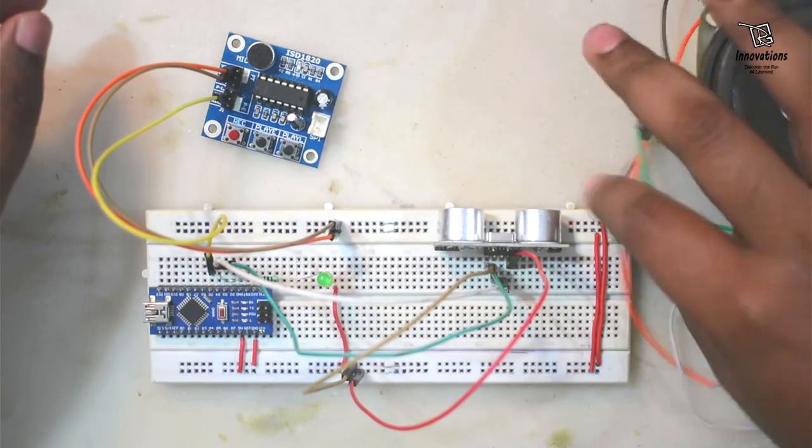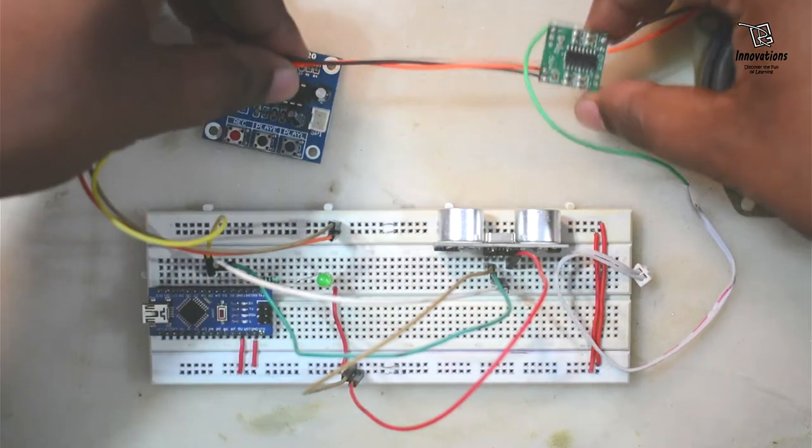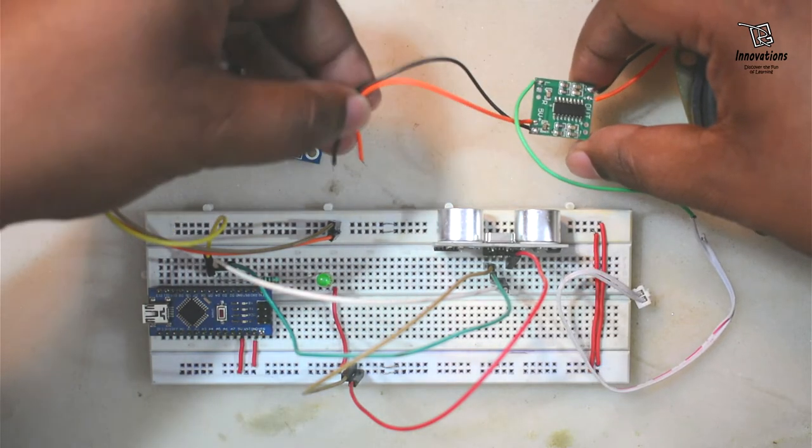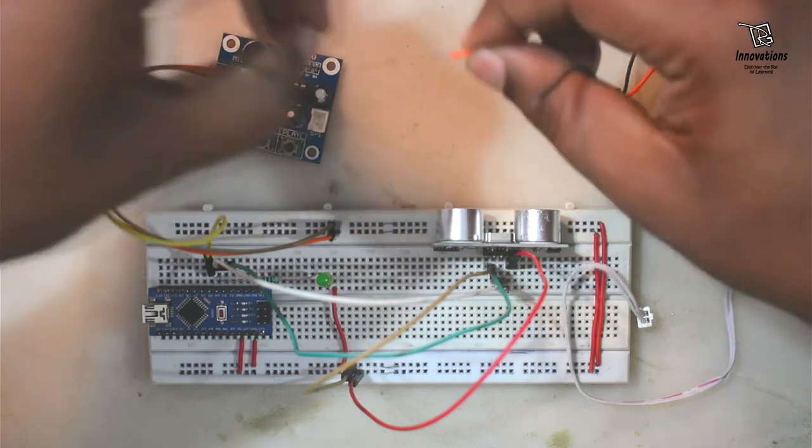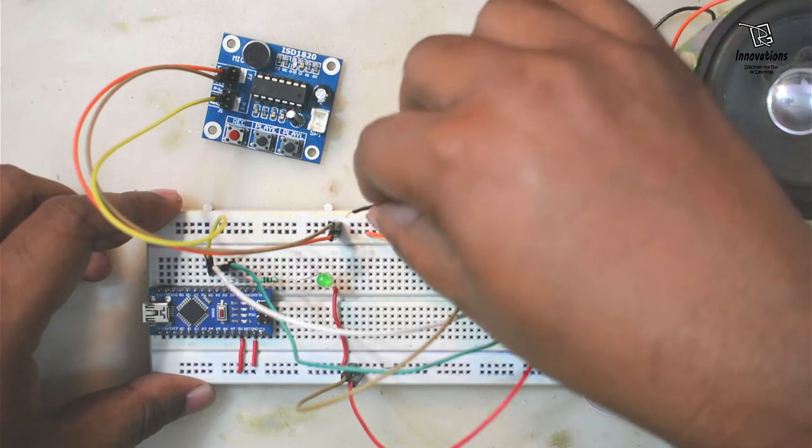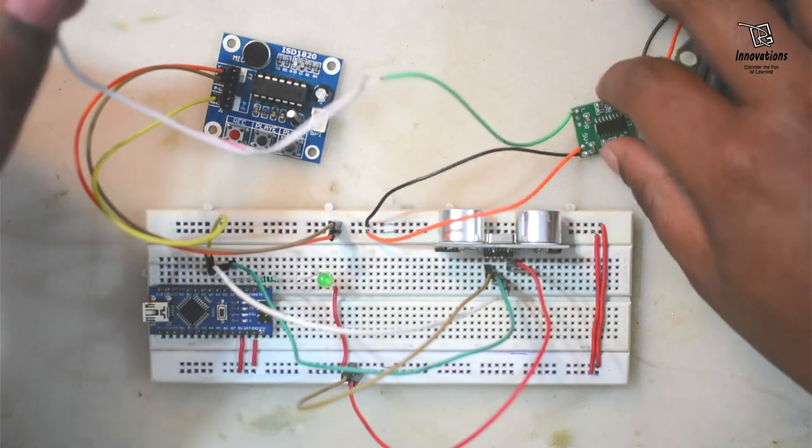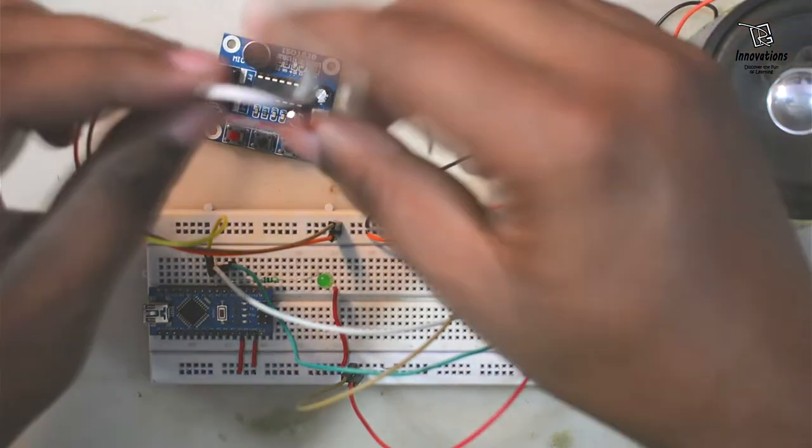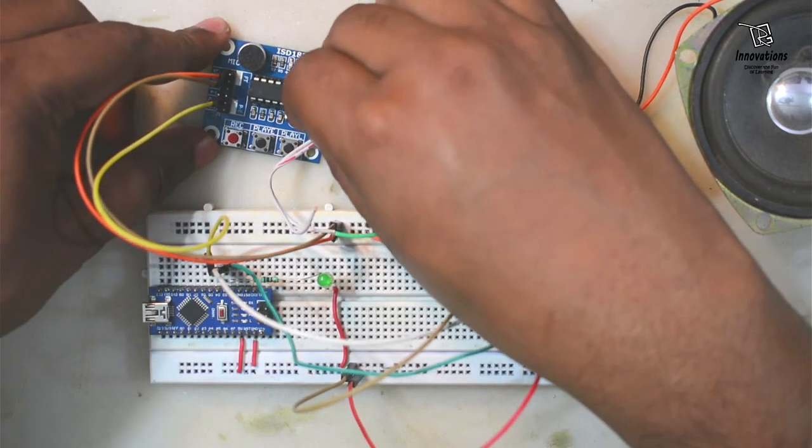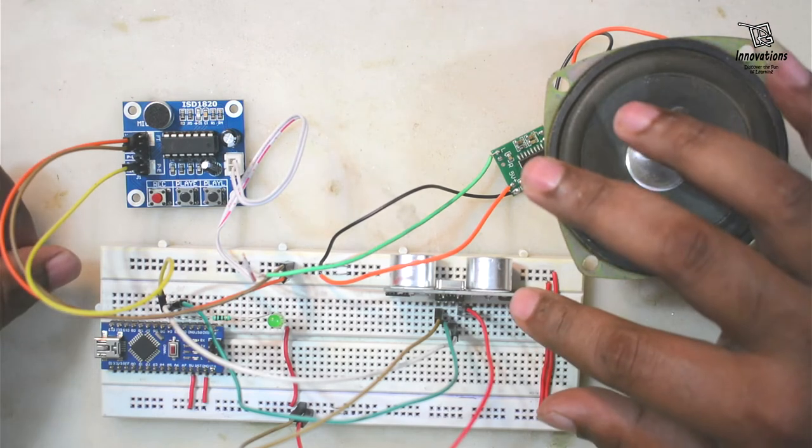Now I will connect the amplifier. First I need to connect the amplifier power supply wires. This is the amplifier module. These two are the power supply wires 5V. I am connecting this in the power rail, positive and negative. Now the input of the amplifier goes to the output of the ISD1820. So here my circuit is complete.